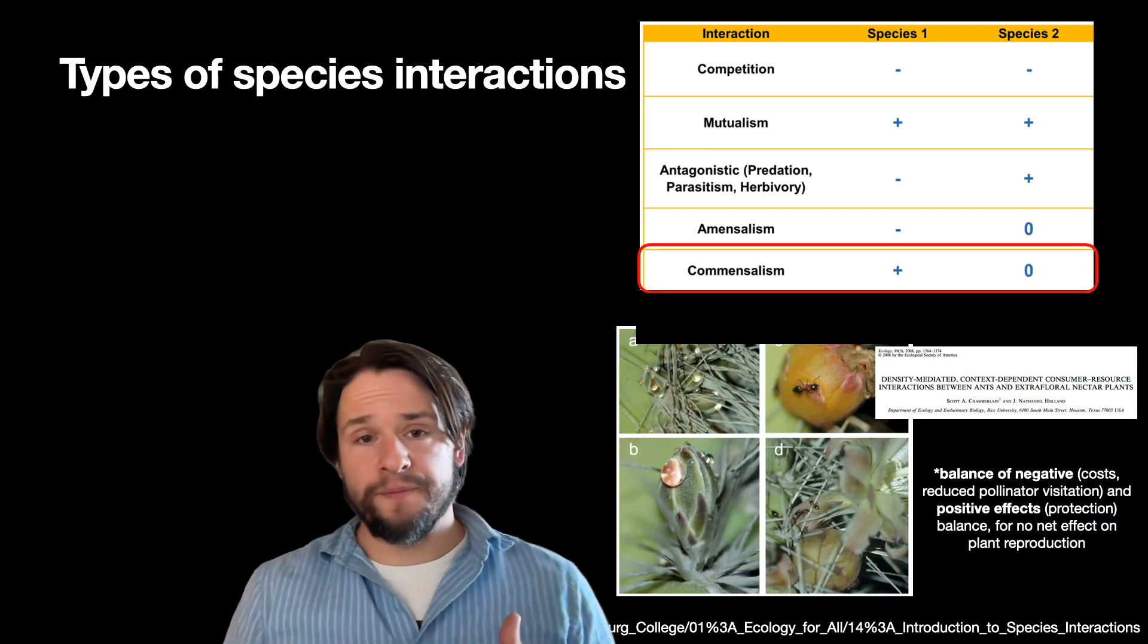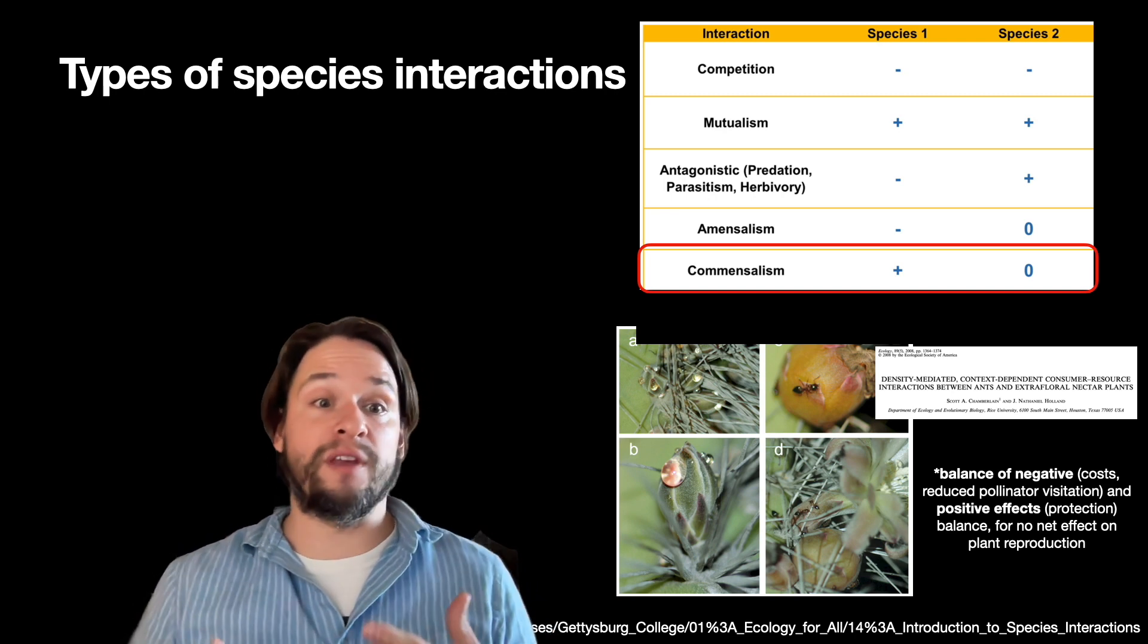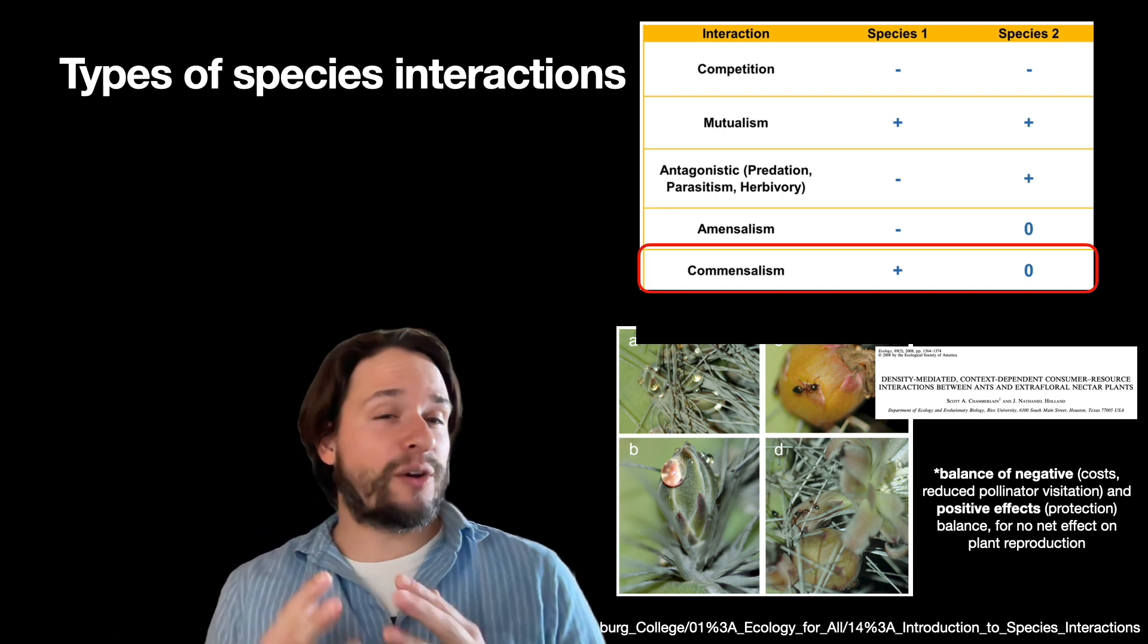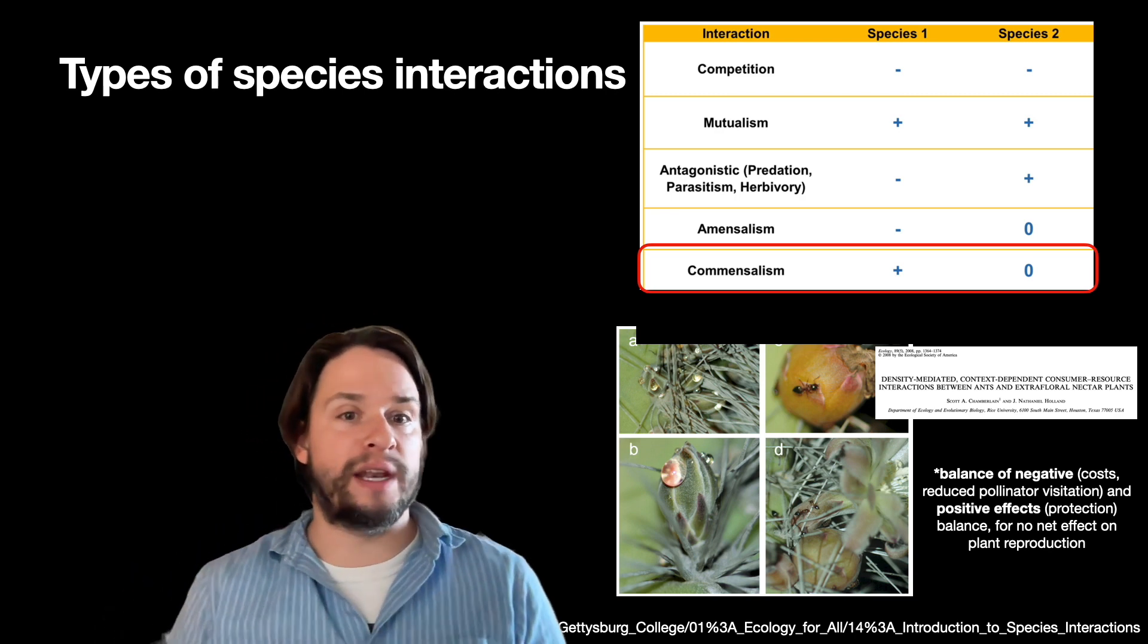You can also see the opposite where one partner might benefit but the other partner is unaffected. And there can be a little bleed sometimes between, for example, commensalism and mutualism.